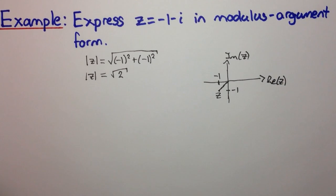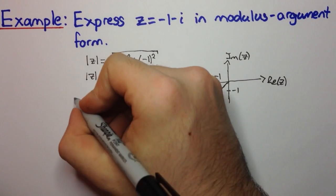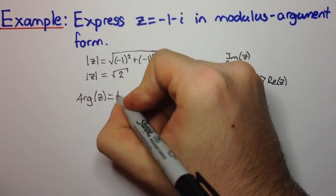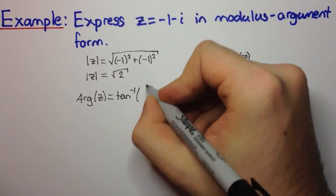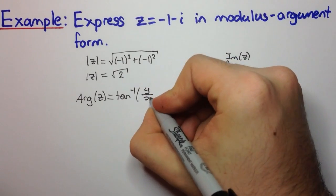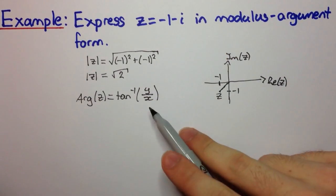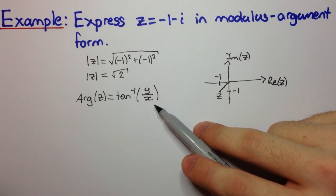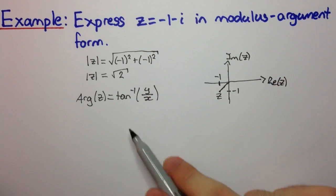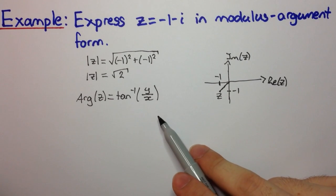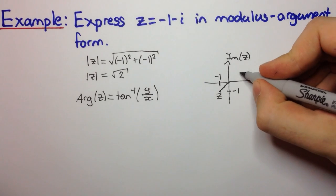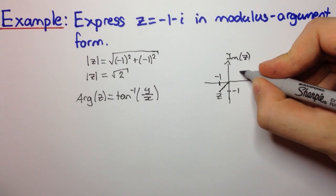Now, the best thing, in my opinion, to work out the argument—so remember our argument usually we worked it out as the inverse tan of y over x, the imaginary part over the real part. Now if we do that here, we're going to get minus 1 divided by minus 1, which is 1. And so we're going to get tan inverse of 1. But what's tan inverse of 1? Well, that's pi on 4, which means that we're looking at the angle that's right here.